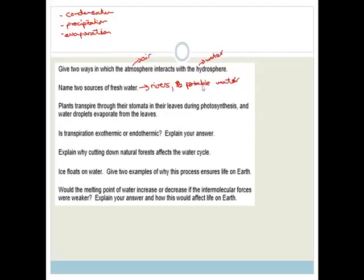Plants transpire through their stomata in their leaves during photosynthesis, and the water droplets evaporate from the leaves. Is transpiration exothermic or endothermic? And the correct answer is that it's exothermic. And what happens is, the reason that the water droplets evaporate from the leaves is actually to cool the leaves down, because transpiration is exothermic, which means it gives off heat.